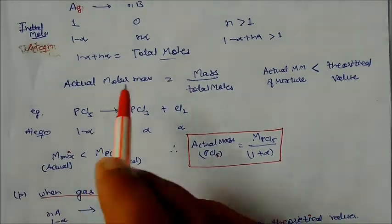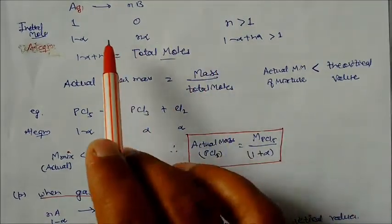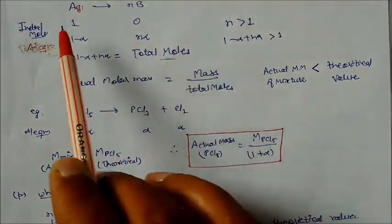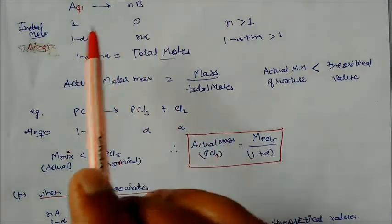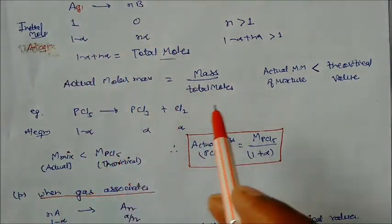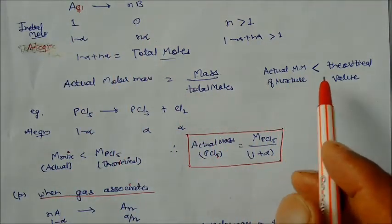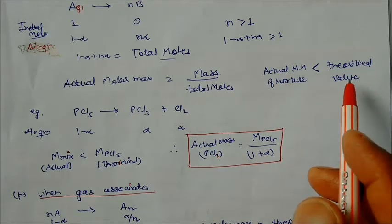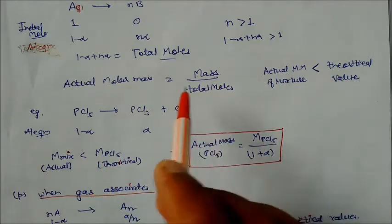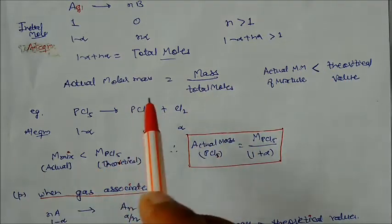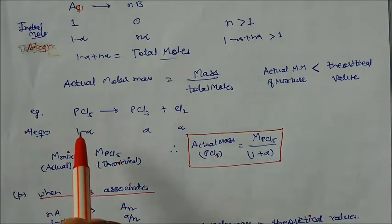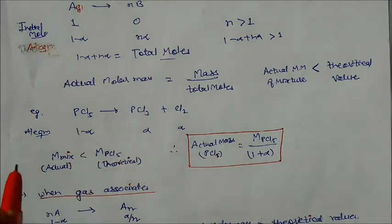The actual molar mass is calculated as the mass of A divided by the total moles at equilibrium. Since total moles > 1 after dissociation, the actual molar mass of the mixture is always less than the theoretical molar mass. So experimental molar mass is always less than theoretical molar mass in the case of dissociation.